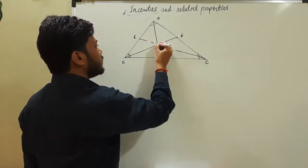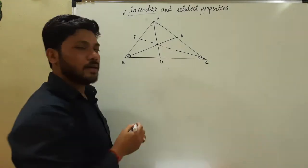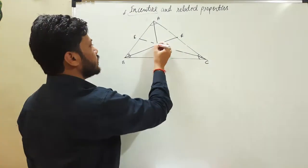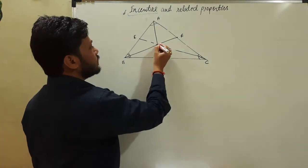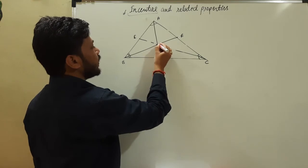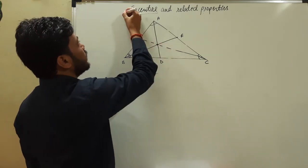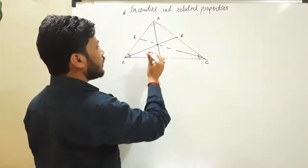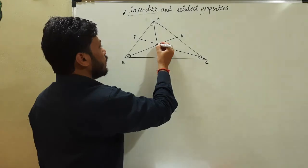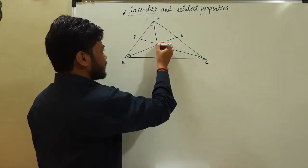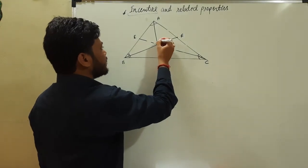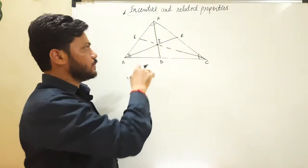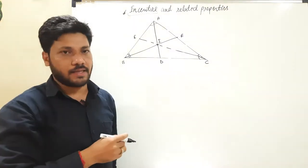All these three angle bisectors intersect at a certain point, and this certain point is called incenter. This point is commonly represented by the symbol I, which means incenter.